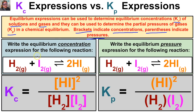To write the equilibrium concentration expression (Kc) for the reaction H2 + I2 ⇌ 2HI, we take our products — in this case only HI — and write [HI]^2 since the coefficient is 2, divided by the concentrations of our reactants: [H2]^1 times [I2]^1. So Kc equals the concentration of HI squared, divided by the concentration of H2 times the concentration of I2.